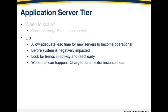In the up direction, you need to allow adequate lead time for new servers to become operational. Perhaps your application servers are simple web servers running Apache needing to pull down a small file from an SVN repo or S3 bucket and become operational quickly. But you may be using Windows servers which take longer to boot and may need to pull down a larger file — these take much longer to reach an operational state. You need to factor those lead times into your scaling algorithms so that you have infrastructure in place when needed. Scale up before the system is negatively impacted — look for trends, react early, be proactive and not reactive.